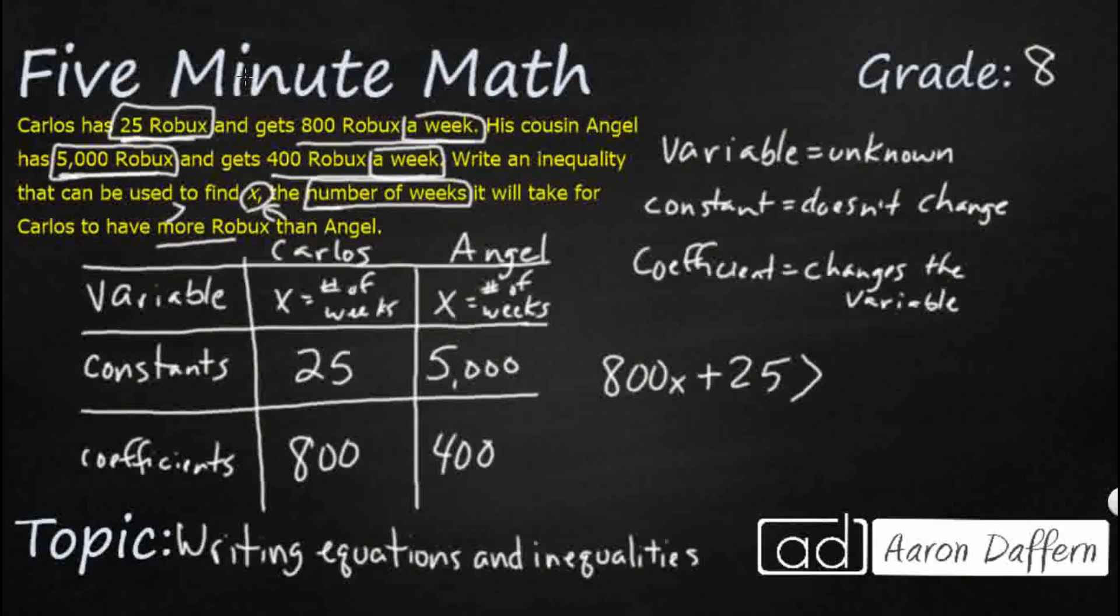And then we've got Angel. Angel, let's get his coefficient. He gets 400 a week. A week is X. Remember that X is the number of weeks. Plus, what does he start with? 5,000. If we wanted to make this an equation, we would just change this to have the same. And then we can turn that into an equation.